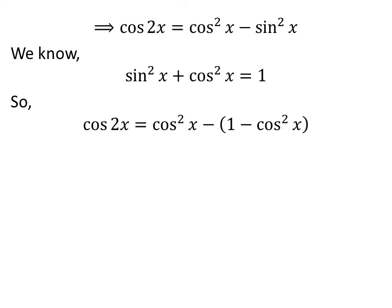Thus, cos 2x equals cos squared x minus (1 minus cos squared x).